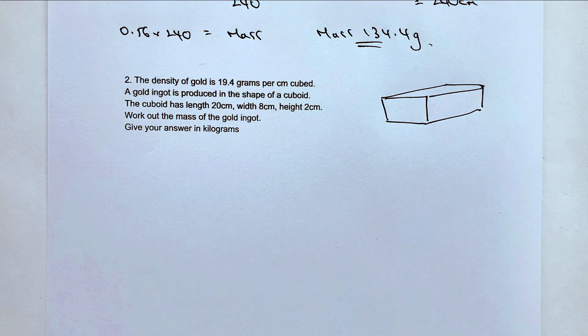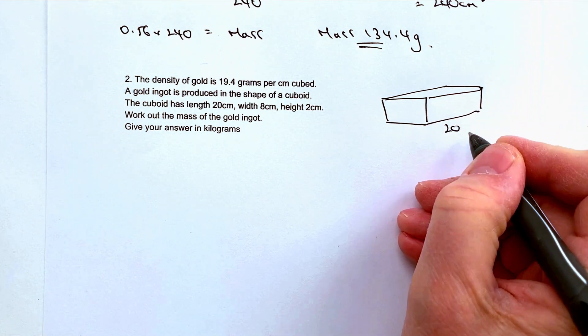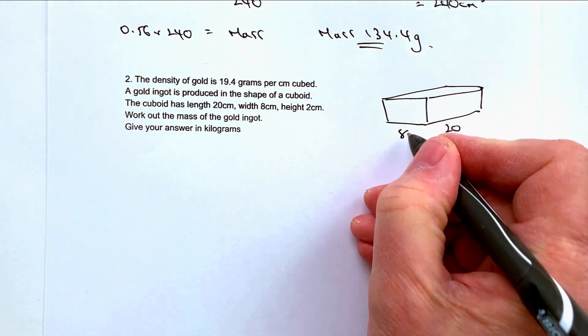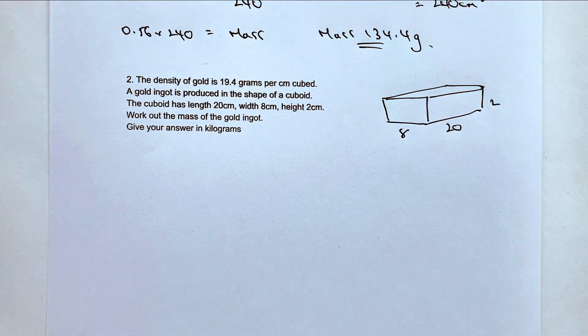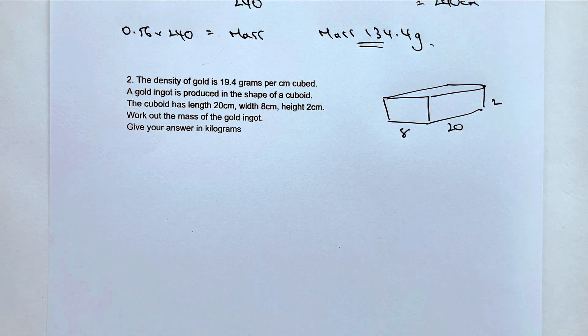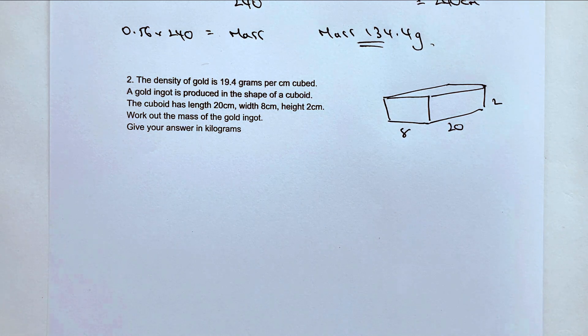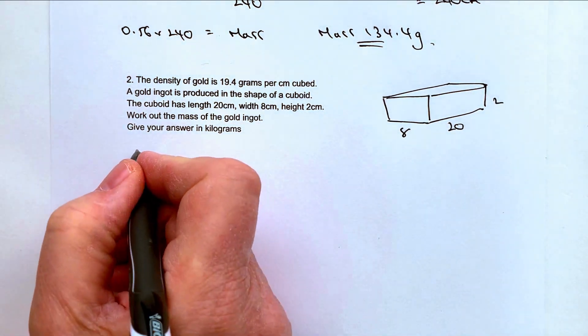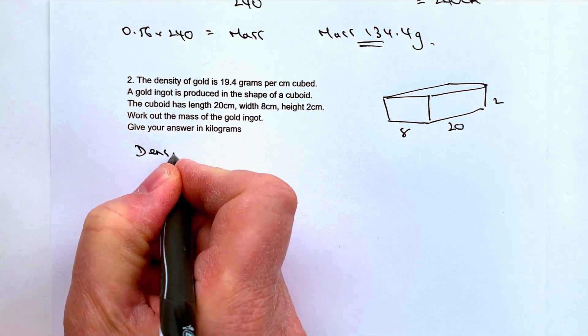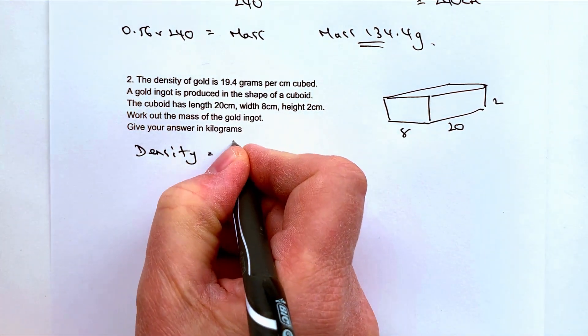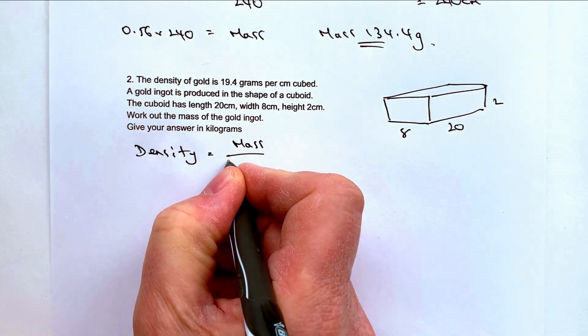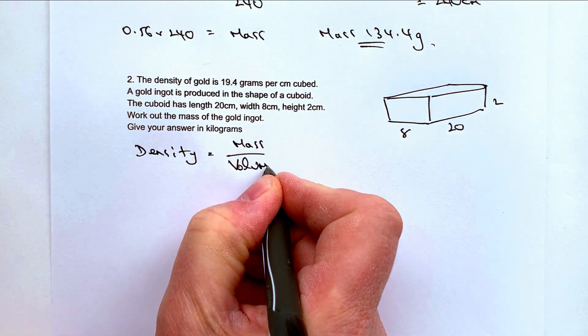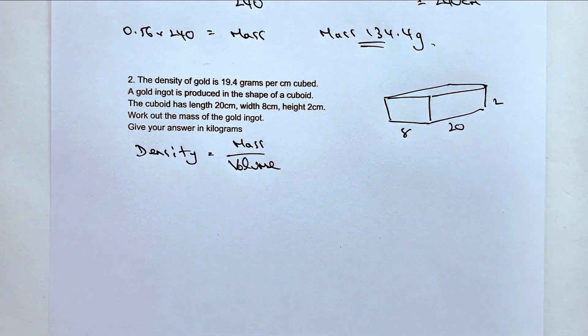So the cuboid has a length of 20 centimeters, it has a width of 8 and it has a height of 2. That's good because again we can work out the volume of that if we need it, and we do because we're going to work out density equals mass divided by volume. So as we had before we've got the density and we've got the ability to work out the volume.